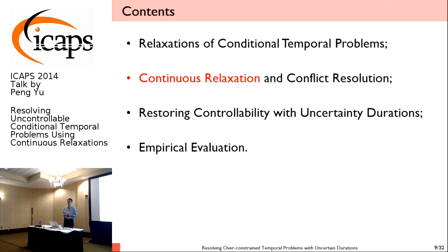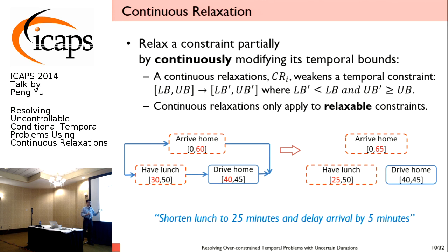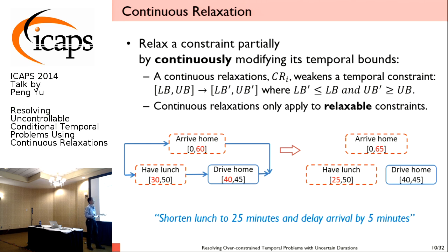Let me give a quick review of our previous work on consistency-based continuous relaxation, published last year. Continuous relaxation is defined in contrast to discrete relaxation. Consider a simple temporal problem with three constraints: have lunch, drive home afterwards, and arrive home within 60 minutes. A discrete relaxation approach would drop one activity or completely ignore constraints — none of which are really preferred. The good solution a human would find is to slightly relax the arrival home constraint by five minutes and shorten lunch by five minutes, restoring consistency.